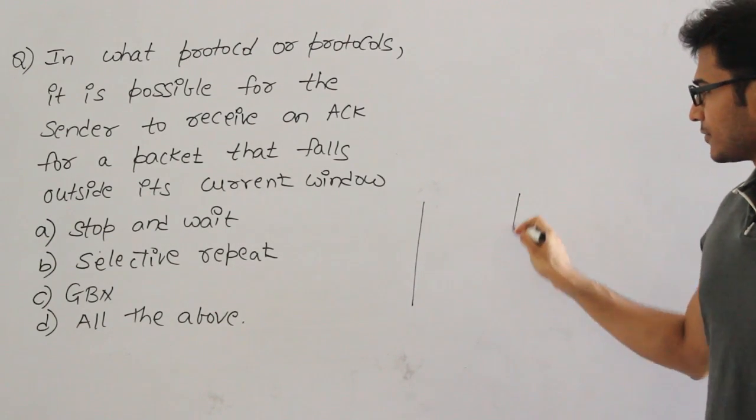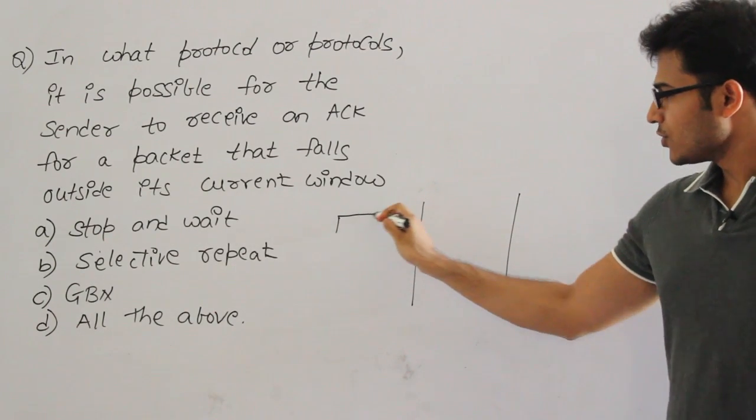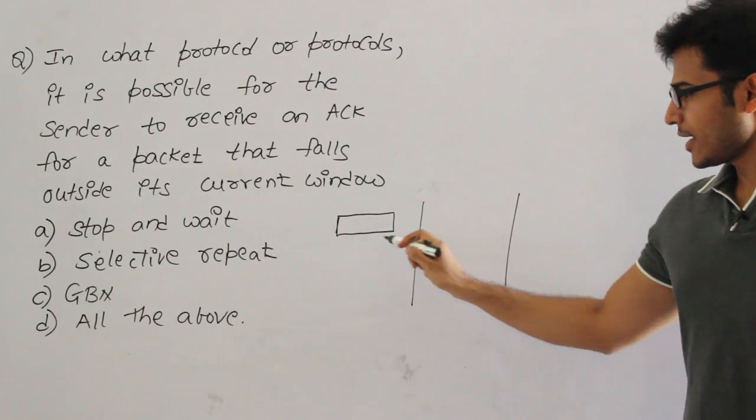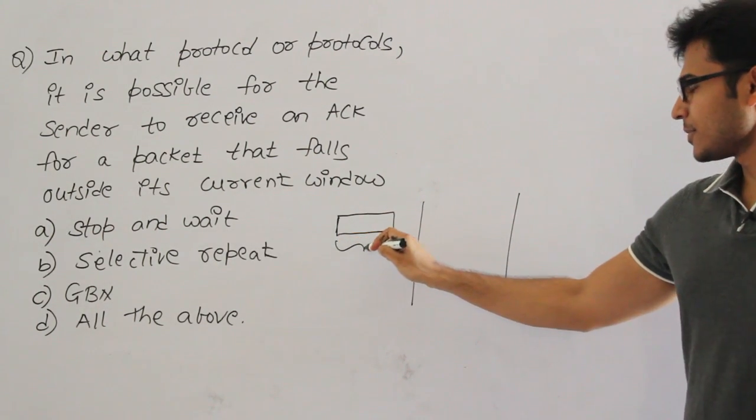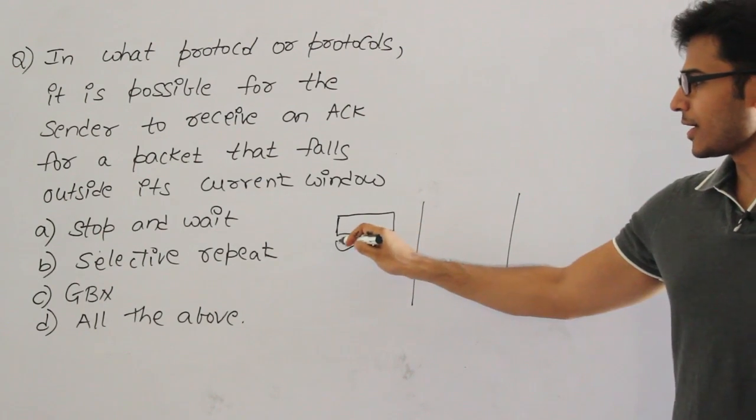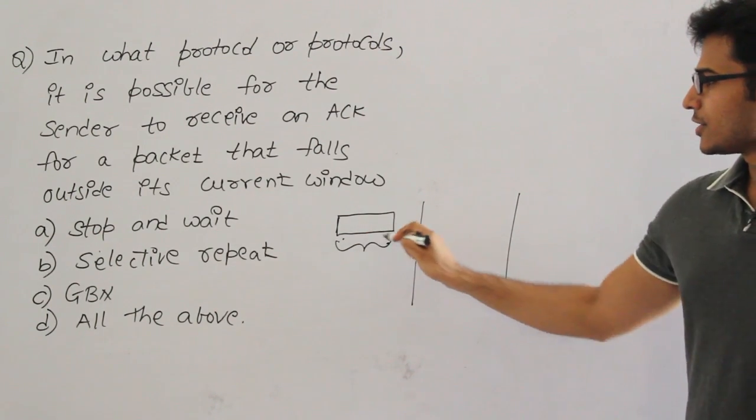If you have a sender and receiver and if you have a window, sending window, you are sending some packets and you are expecting that you get the acknowledgement only for the packets which are in this range, right?